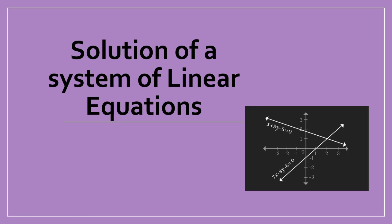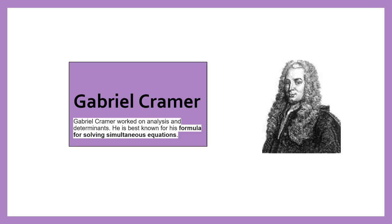In linear algebra, Cramer's rule is an explicit formula for the solution of a system of linear equations and is valid whenever the system has a unique solution. French mathematician Gabriel Cramer (1704-1752) discussed the method in his publication on the rule for the arbitrary number of unknowns in the year 1750.